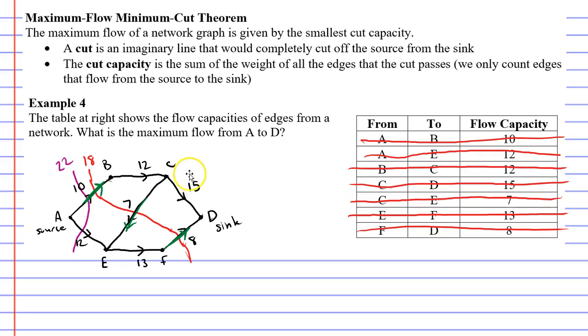And when you have a look at this diagram and try some other cuts, you'll find that you can't beat this cut capacity of 18. So the answer to example 4, the maximum flow from A to D, is 18.